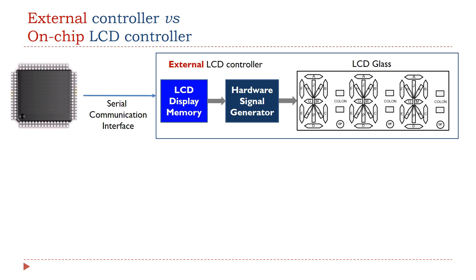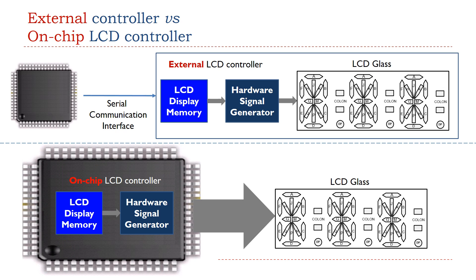The LCD controller can be built in an external LCD module or in a microprocessor chip. If the LCD controller is external to the processor, the processor uses some serial communication interface to send a string to the controller. If the LCD controller is on-chip, the microprocessor can directly drive an LCD glass without any extra hardware. STM32L processors have an on-chip LCD controller. An external LCD controller typically requires much less processor pins, and software to interface an external LCD is relatively simpler.